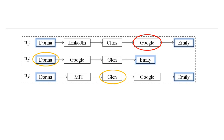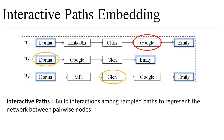In this paper, we introduce a novel concept, Interactive Paths, to model the interactions among multiple paths. With this concept, we wish to strongly couple the paths by encoding dependencies among objects in different paths. For example, if we add two directed edges from Donna in P2 and Glenn in P3 to Google in P1, Google could see a more complete picture of the connecting structure between Donna and Emily. Finally, we can add all the other interactions for better representation.